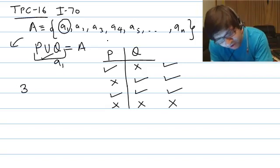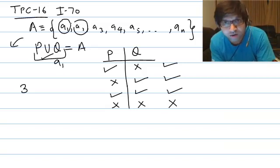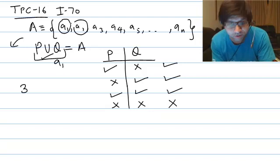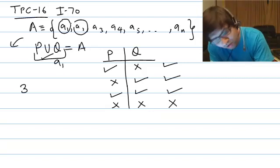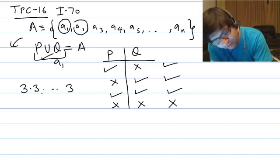If we take element A2, again we have the same options. For A2 to be included in P∪Q there are three options: it goes to both P and Q, it goes to P but not Q, or it goes to Q but not P. So again we have three options. Repeating this for all elements up to An, we get 3 × 3 × 3 multiplied n times. The total number of ways to form P and Q such that P∪Q = A is 3 to the power n.